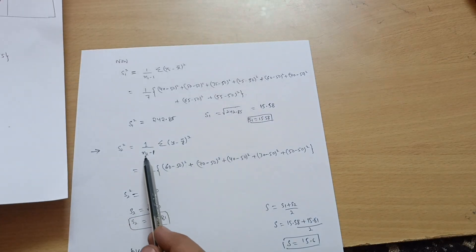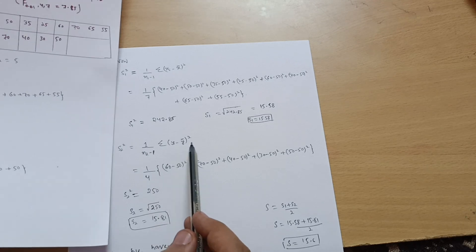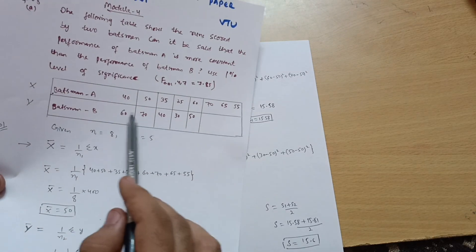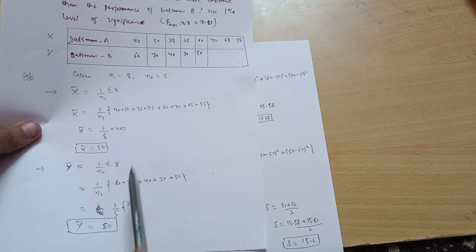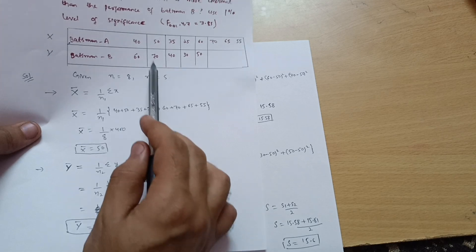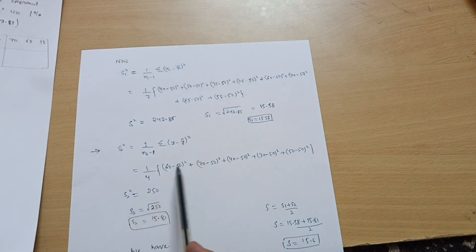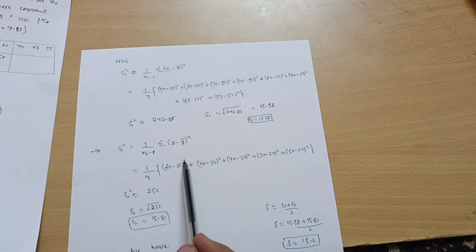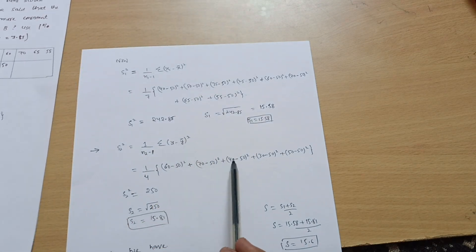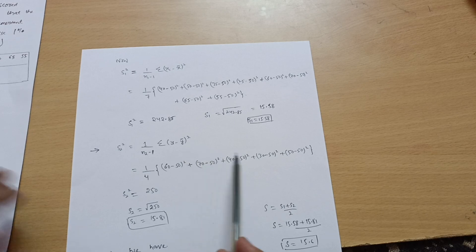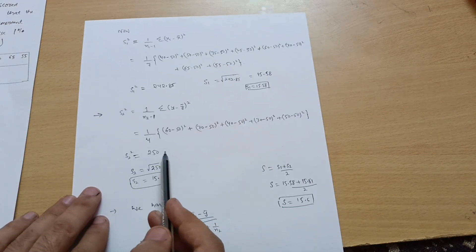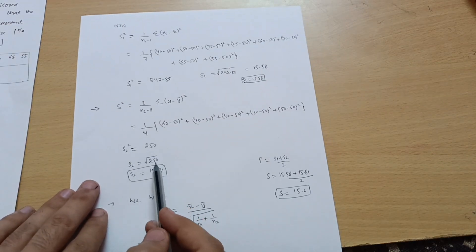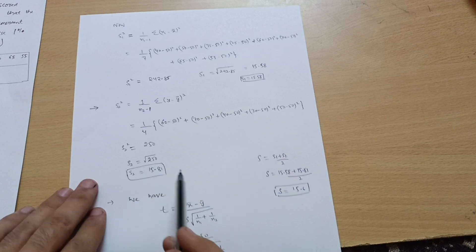Similarly, s2² = (1/(n2 − 1)) × Σ(yi − ȳ)², where n2 is 5, so we divide by 4. The Y values are 60, 70, 40, 30, 50 and ȳ is 50. Computing: (60 − 50)², (70 − 50)², (40 − 50)², and so on, gives s2² equal to 250. Therefore s2 equals √250 ≈ 15.81.